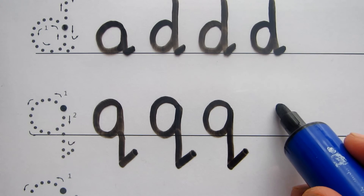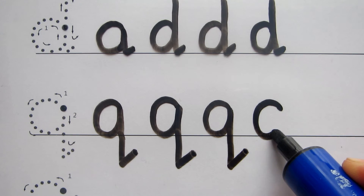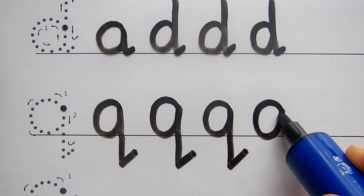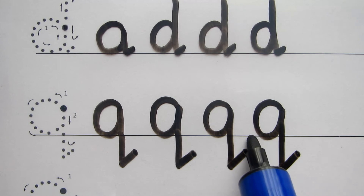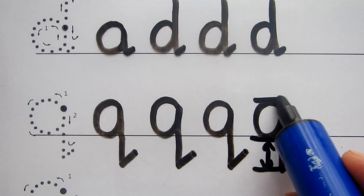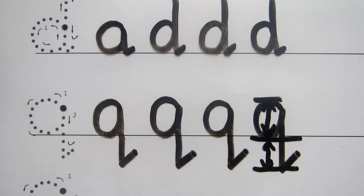One more Q: start there, head up, around, down to the line, back to where you started, stop there. Do not take your pen off. Straight down, continue going, and a line there. If you look, this distance here is about the same distance as the body. That will change as you develop your style.